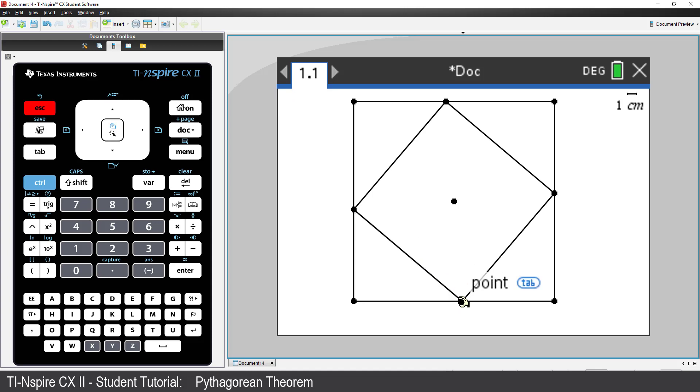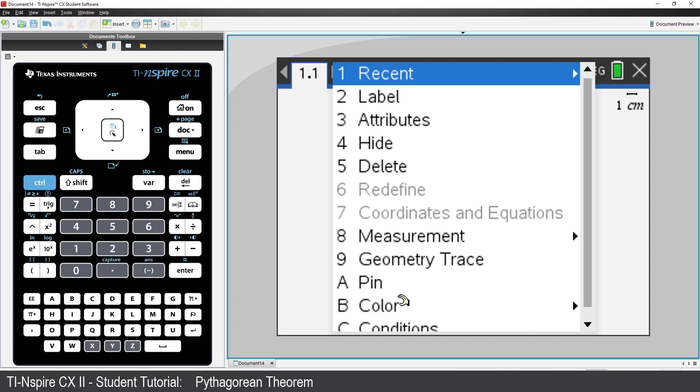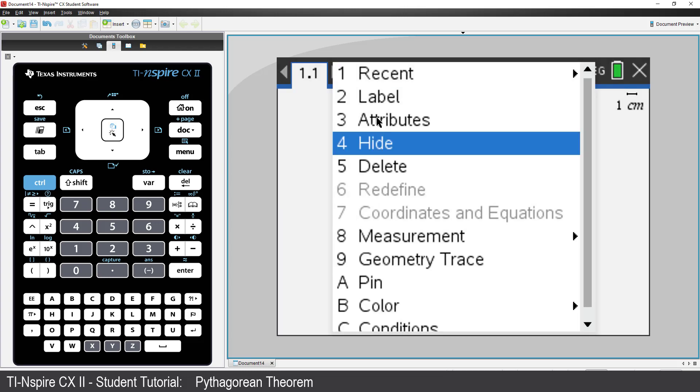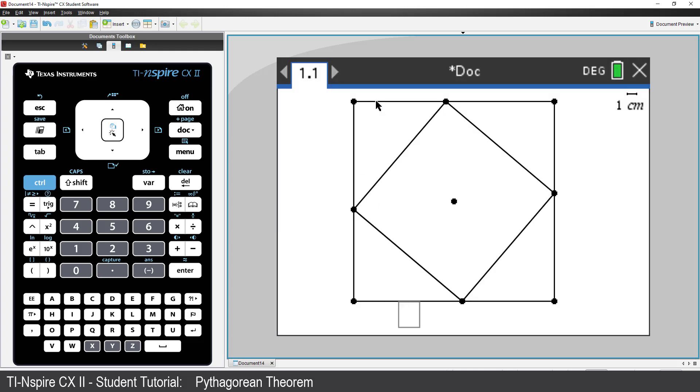To label each of the line segments, move the mouse over a line segment. Notice that the tooltip says Segment. If it says Triangle or Square, press the Tab key to toggle through each of the objects in this region. When the tip says Segment, press Control followed by Menu and select Label. I'll label this first segment A. Now go ahead and label segments B and C.